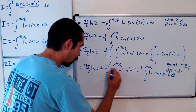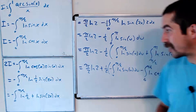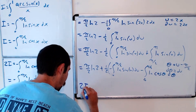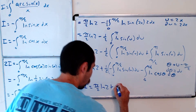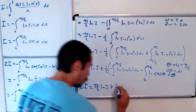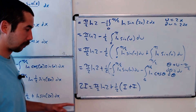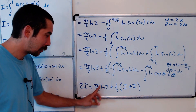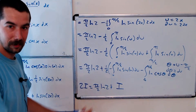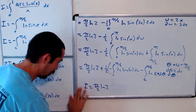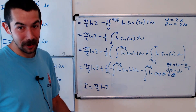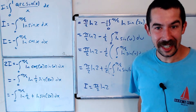Putting this all together and bringing the negative inside: 2I equals pi over 2 ln 2 minus one half times (first integral, which is I, plus second integral, which is also I). So 2I equals pi over 2 ln 2 minus I. Subtracting I over, we get that our integral I equals pi over 2 times natural log of 2. That was a long one! Let me know what you think, and if you like these challenging integrals, I'm happy to do more.